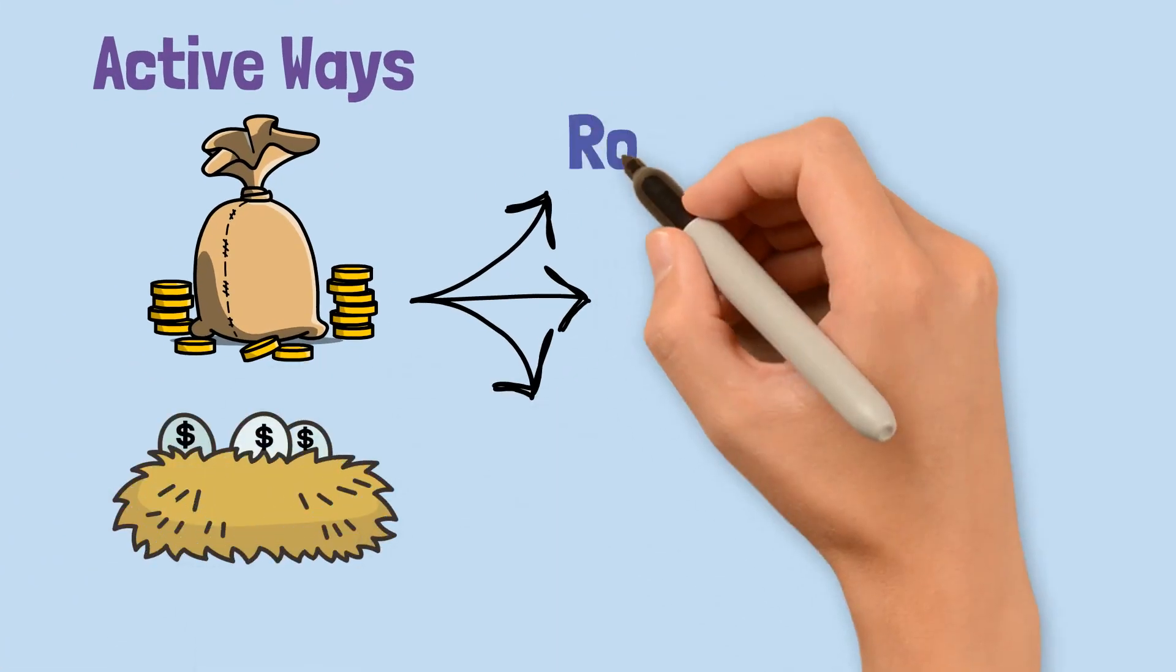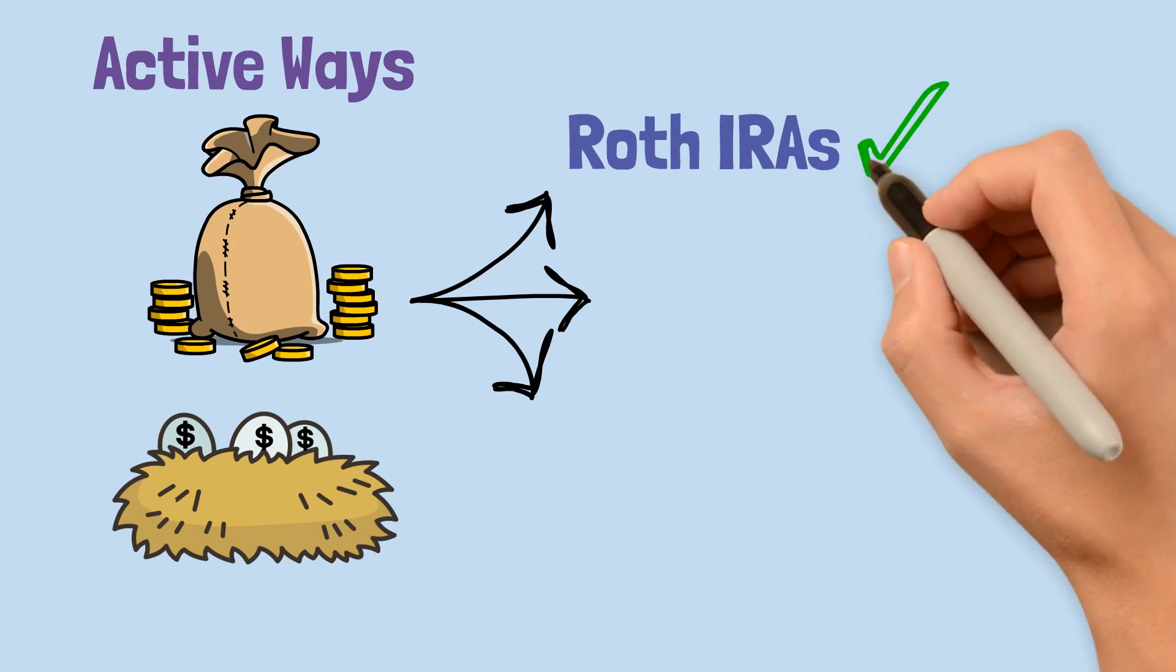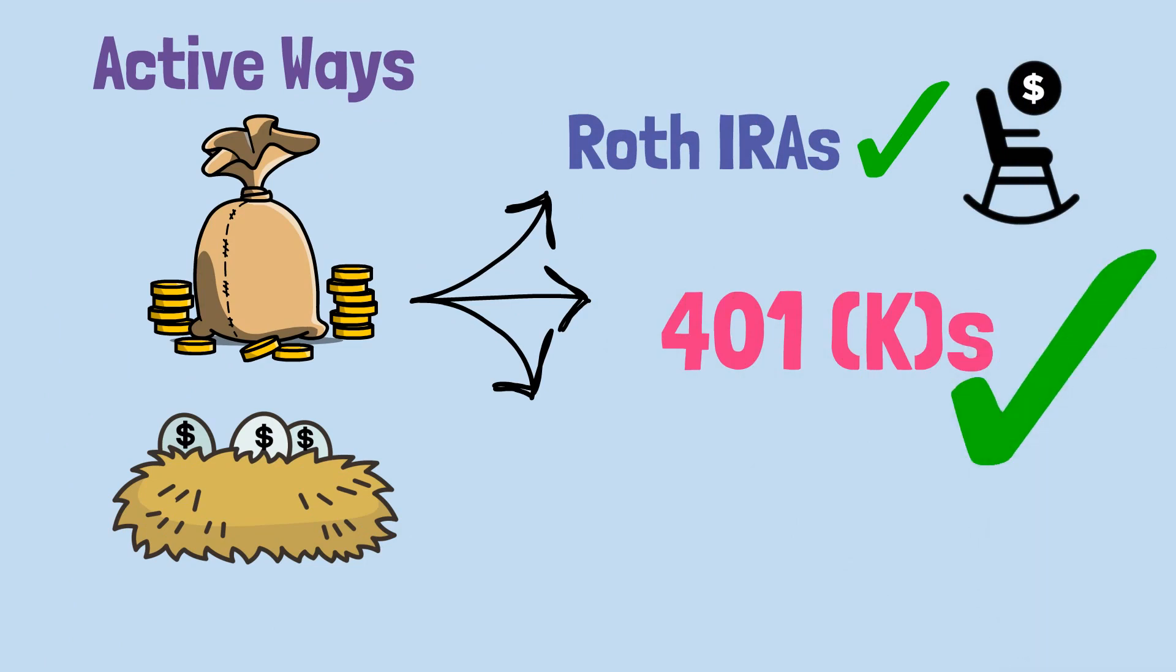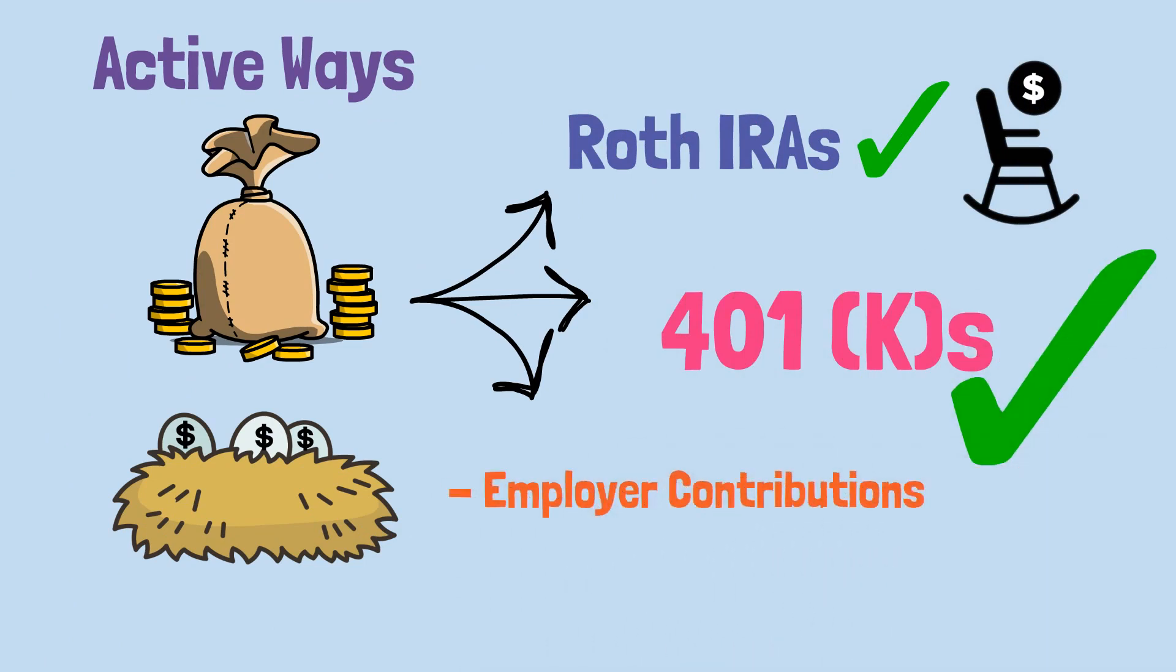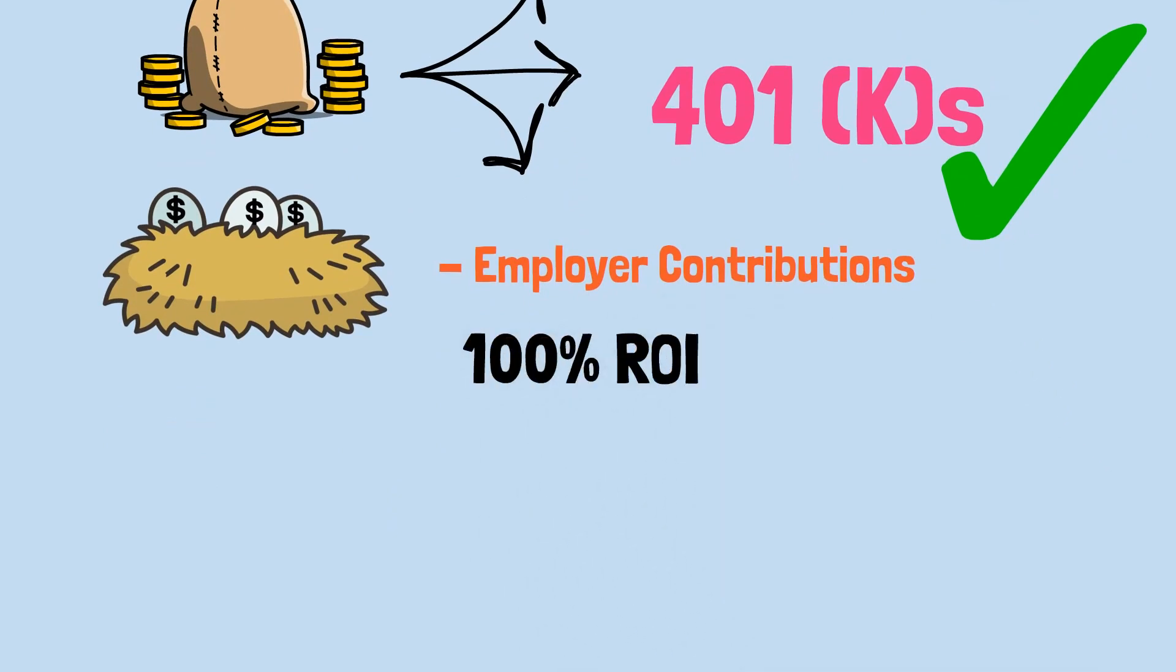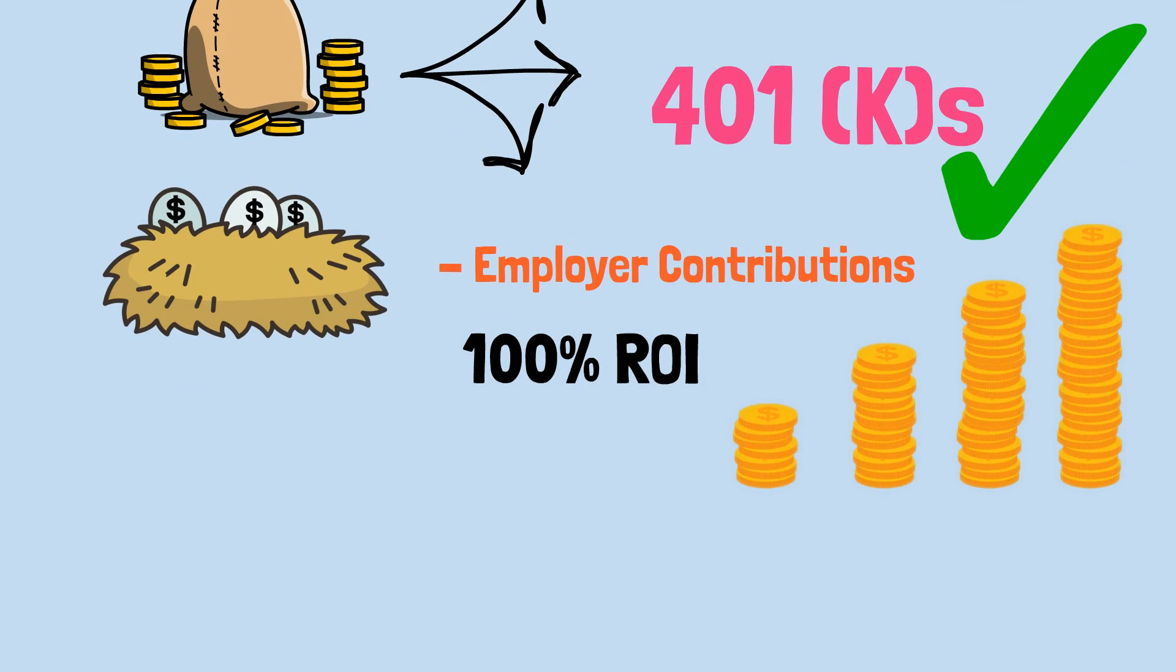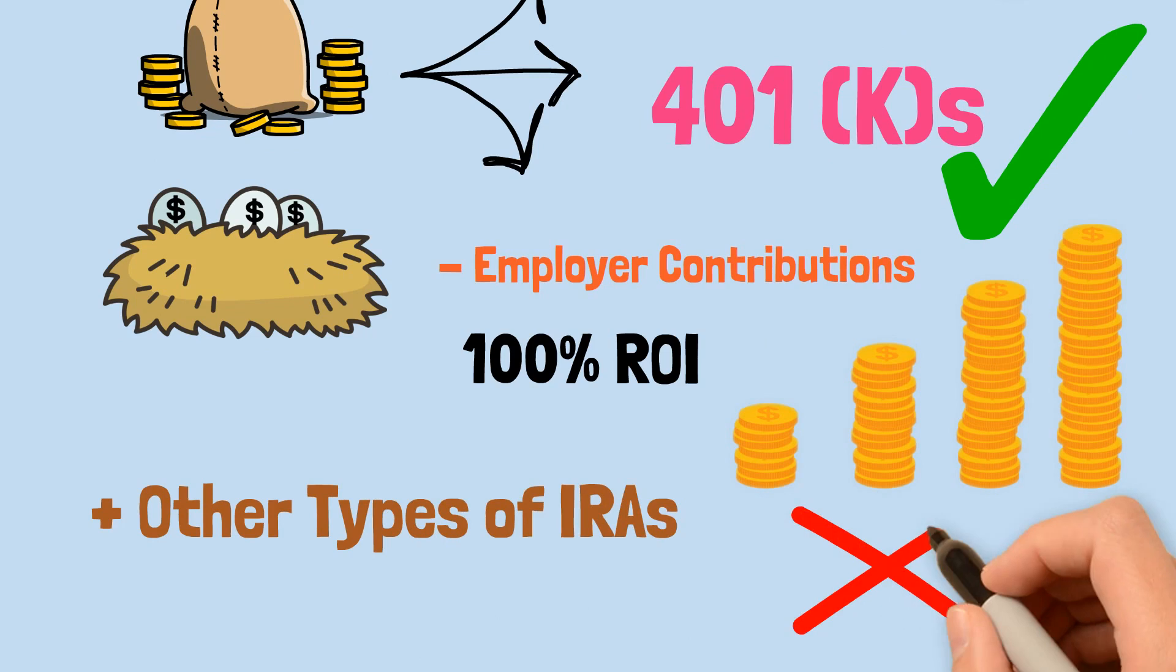Sure, we've already talked about Roth IRAs, which are a great starting point, but did you know that there are other retirement accounts, like 401ks, that offer fantastic benefits? With employer contributions, Liam could get a 100% return on his investment before it's even compounded and grown further. And there are other types of IRA options that you can use to save for retirement too.